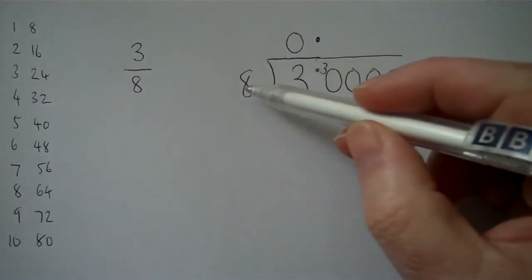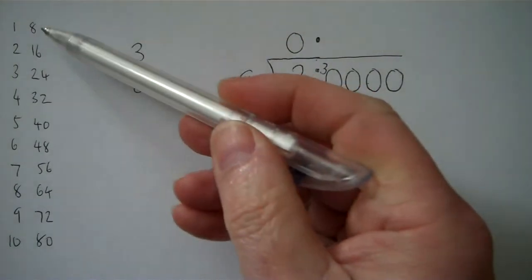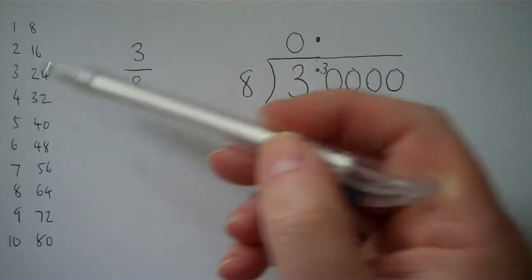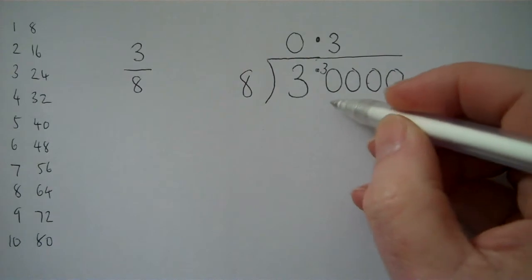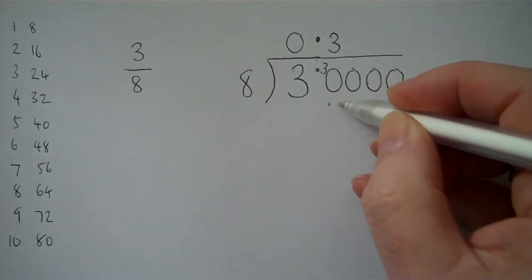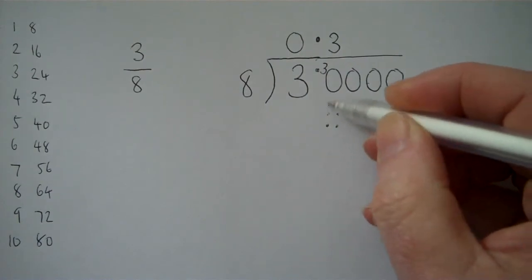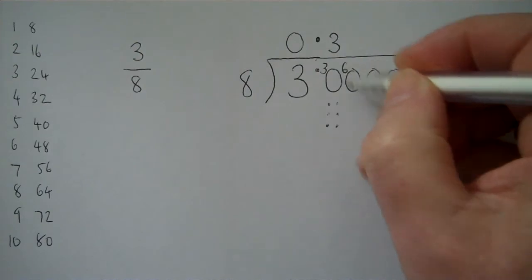So now we're asking how many eights are there in 30. Well 4 eights are 32, that's too many. So 3 eights are 24, but we needed 30, so that's a remainder of 6. We carry that remainder onto the next figure.